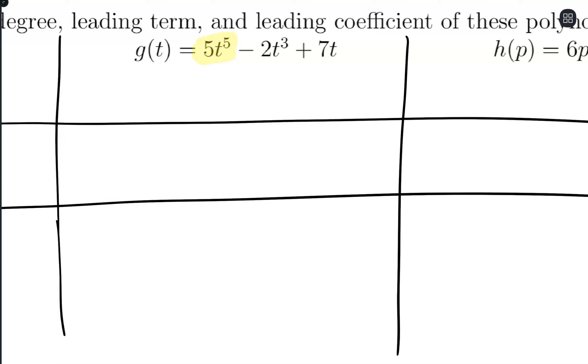The degree comes from the exponent, so this is degree 5. The leading term is the entire 5t to the 5th. And the leading coefficient comes from the number multiplying out front, which also happens to be 5.